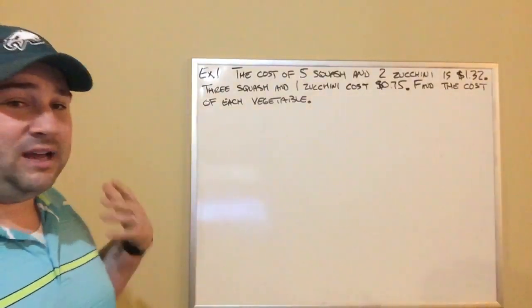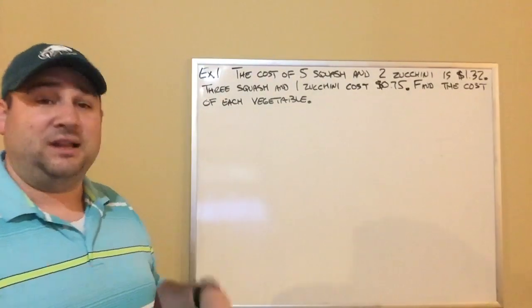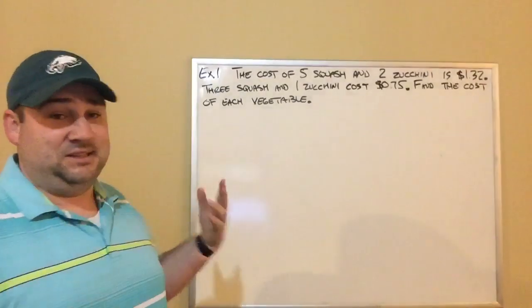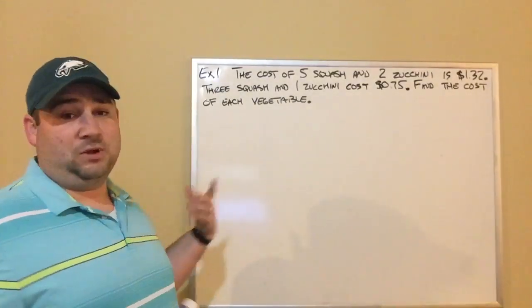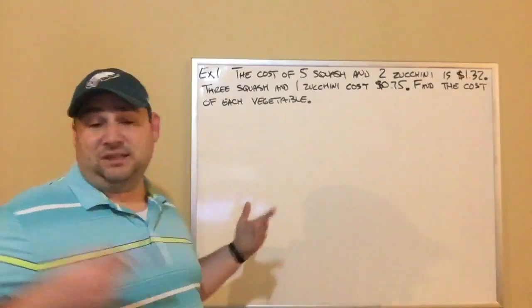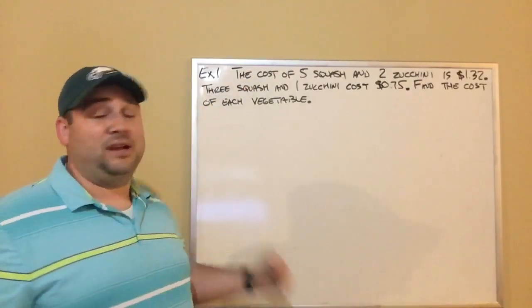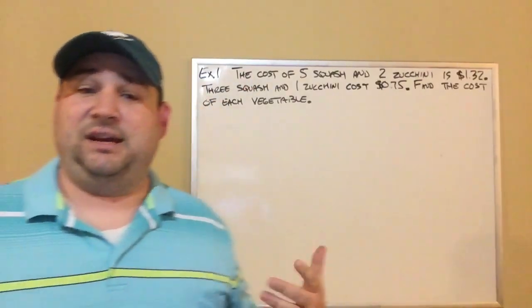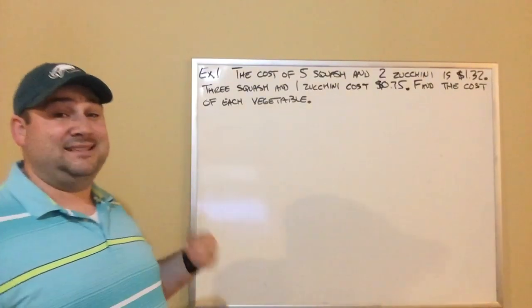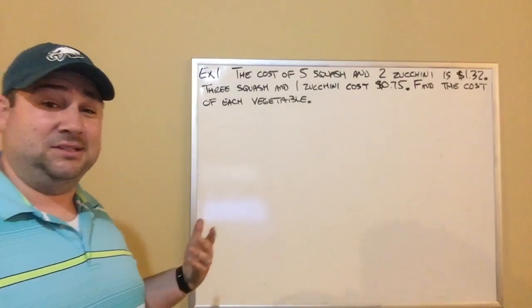So in some way, we got to find how much one squash costs and how much one zucchini costs. We could guess and check. I could be like, what if a squash costs $0.12 and what if a zucchini costs $0.19? And I could try and figure out if that's right. That could take us hours guessing and checking. What we can do is set up a system of equations and solve it.